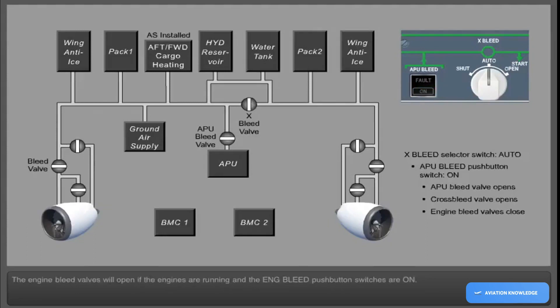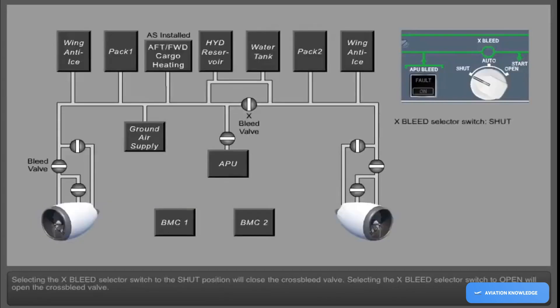The engine bleed valves will open if the engines are running and the engine bleed push-button switches are on. Selecting the cross bleed selector switch to the shut position will close the cross bleed valve. Selecting the cross bleed selector switch to open will open the cross bleed valve.